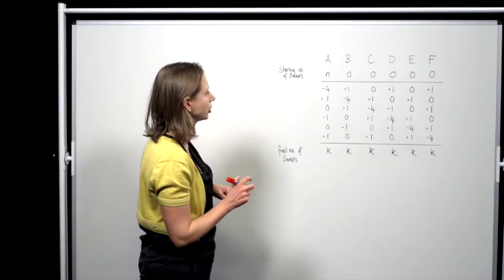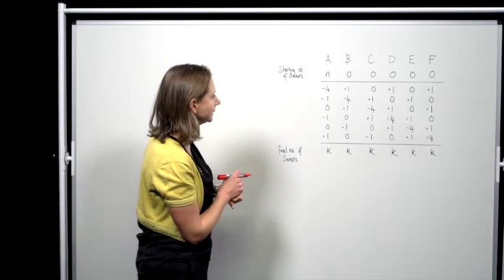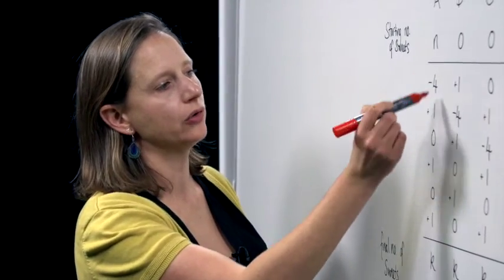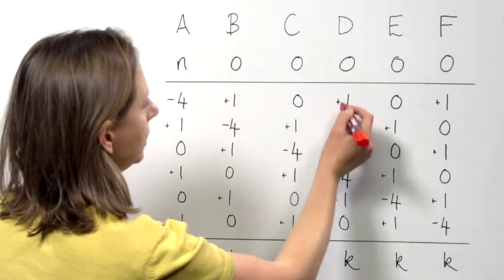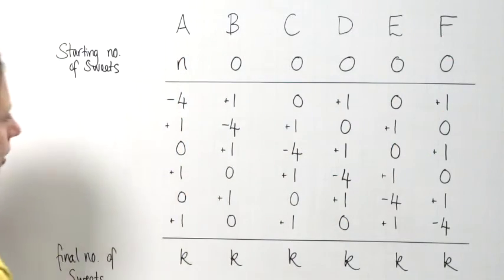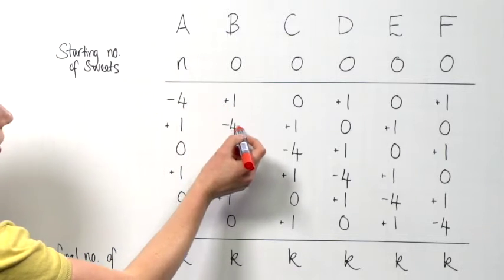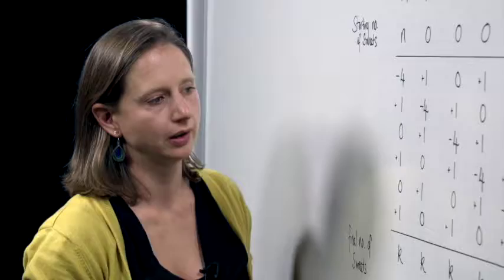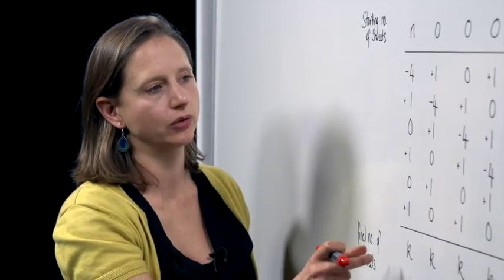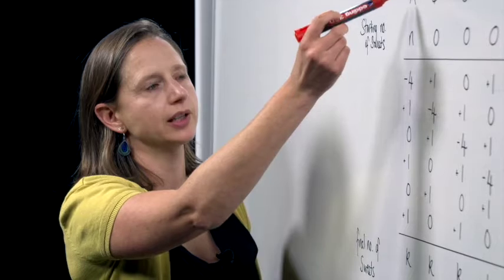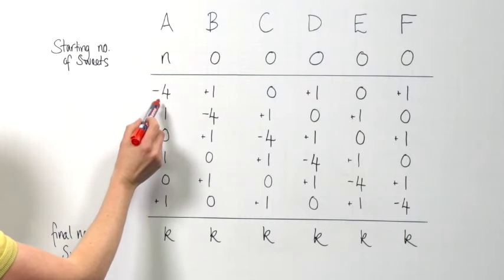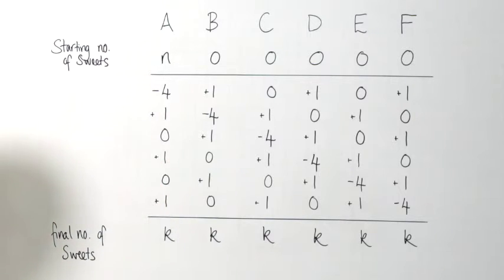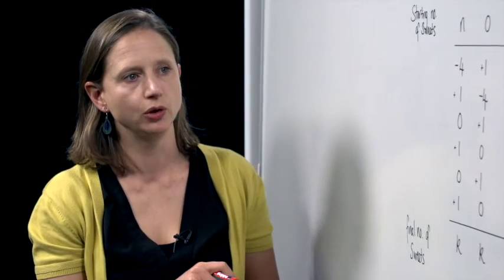So I've made a table to show how the numbers of sweets change. When child A performs a move, A loses four sweets. B gains one, D gains one, and F gains one. When child B performs a move, B loses four sweets, but A, C and E gain one, and so on. If we work down the columns, we see how many sweets a particular child has. A starts with N, they lose four a few times. They might gain one here, gain one here, and gain one here. Now we're not going to worry about the order in which the moves are performed, but it's very important that we know how many times they were performed.